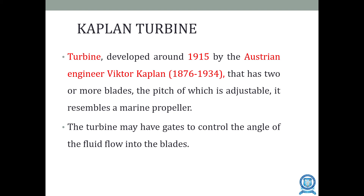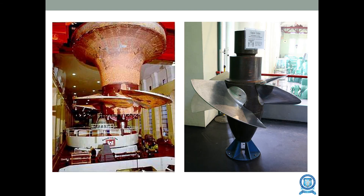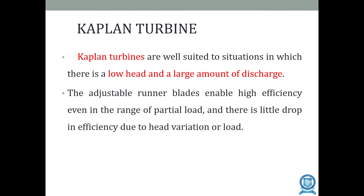The Kaplan turbine was developed around 1915 by Austrian engineer Victor Kaplan. It has two or more blades with adjustable pitch, resembling a marine propeller. The turbine can also have gates to control the angle of fluid flow into the blades. The Kaplan turbine is used where there is low head and a large discharge — opposite to the Pelton wheel. The adjustable runner blades give high efficiency even under partial load, with little drop in efficiency due to head or load variation.